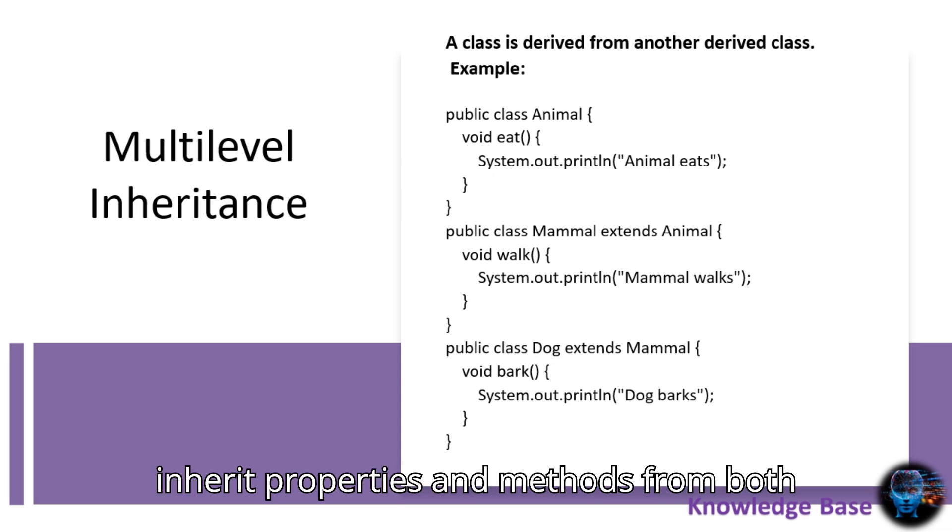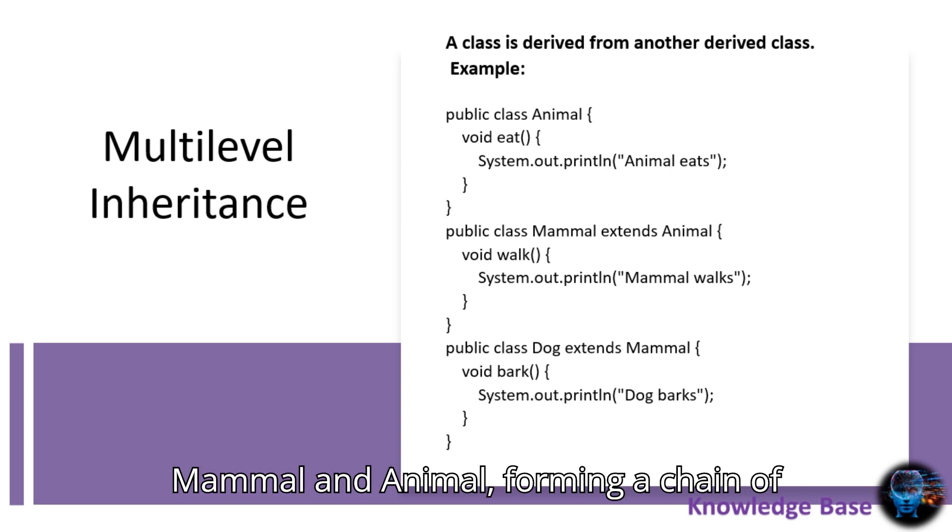The dog class will inherit properties and methods from both mammal and animal, forming a chain of inheritance. Here's how this looks in code.